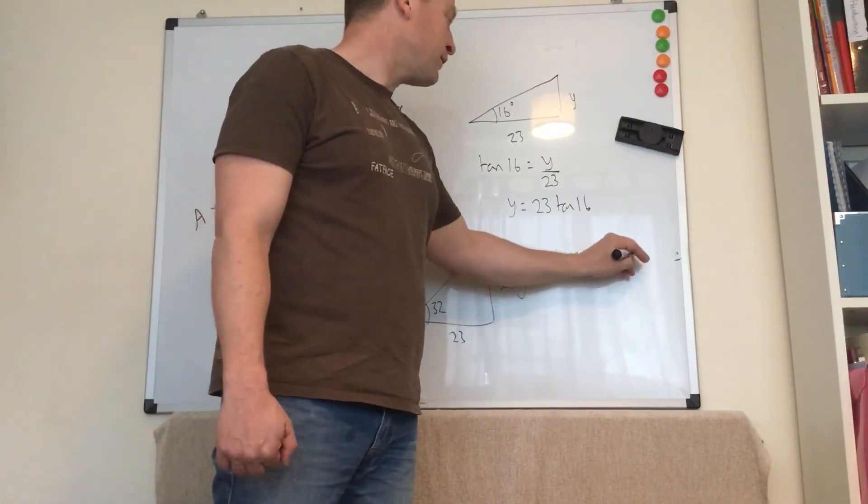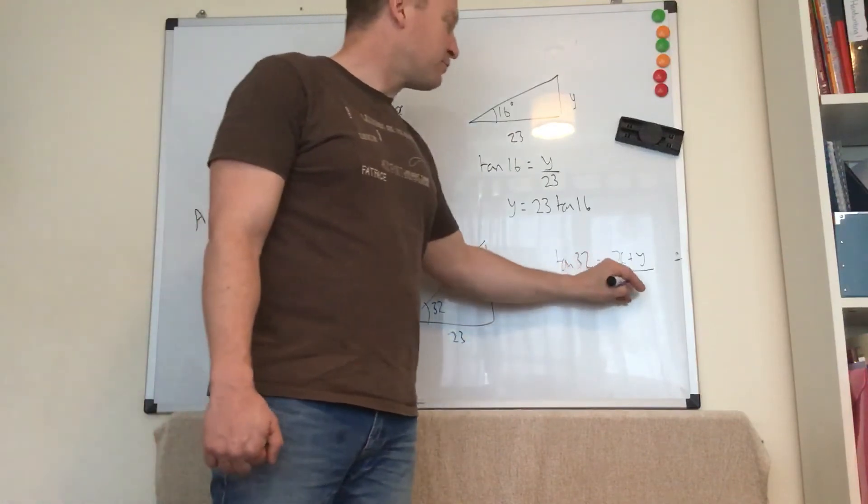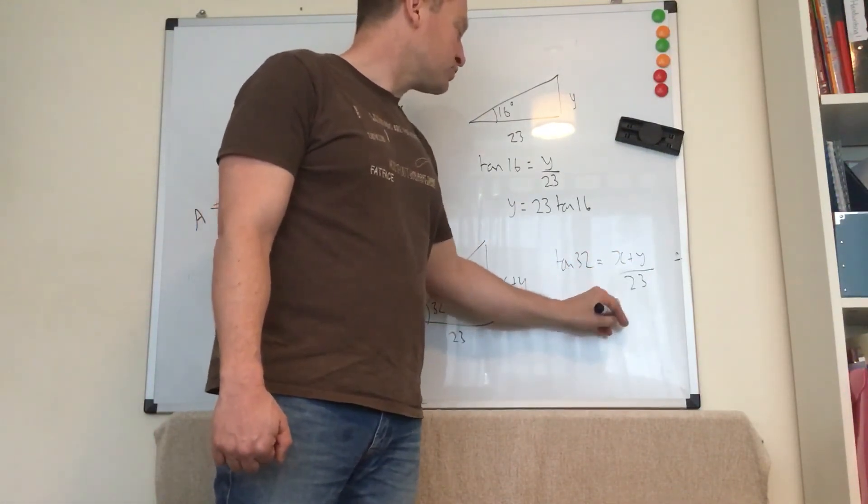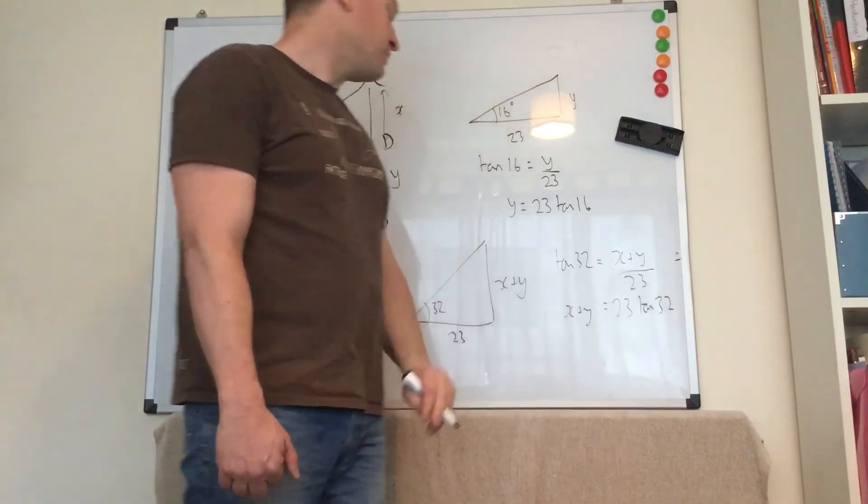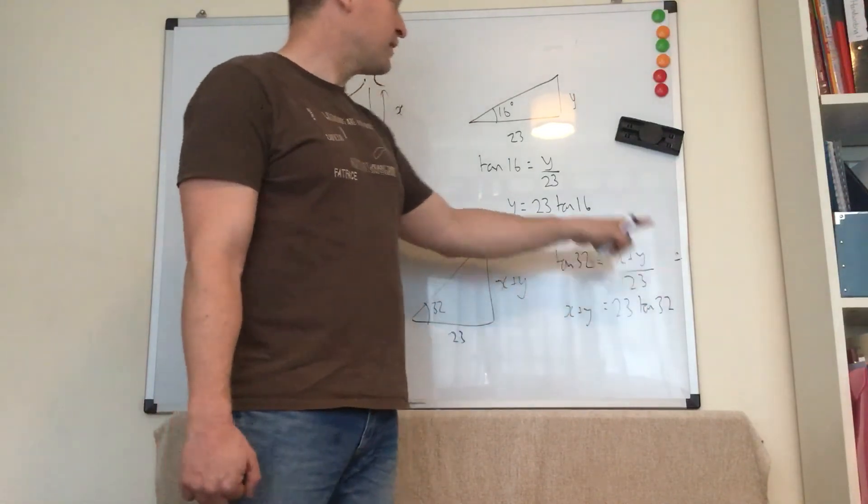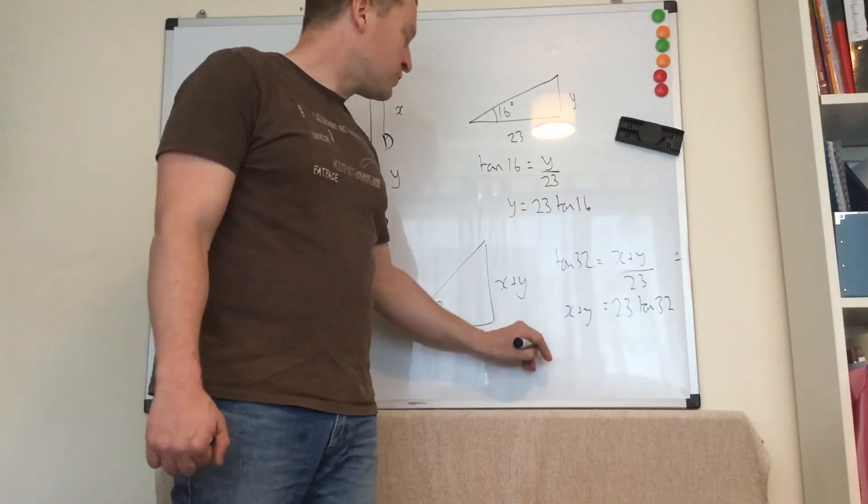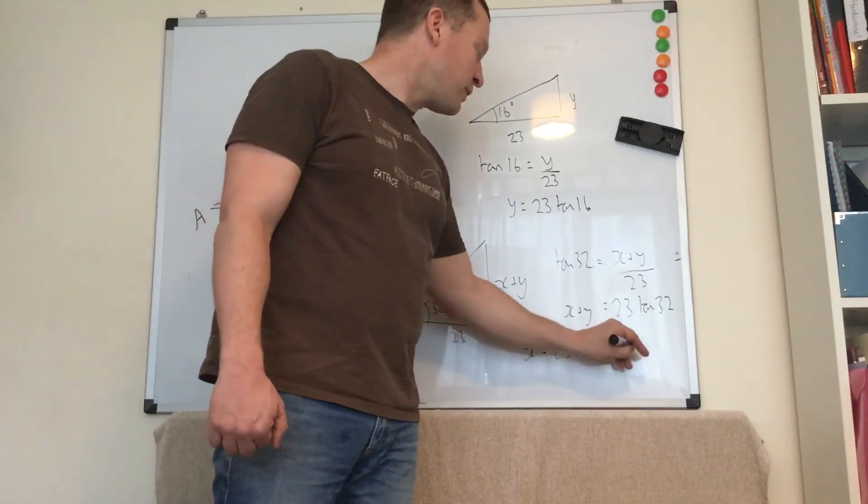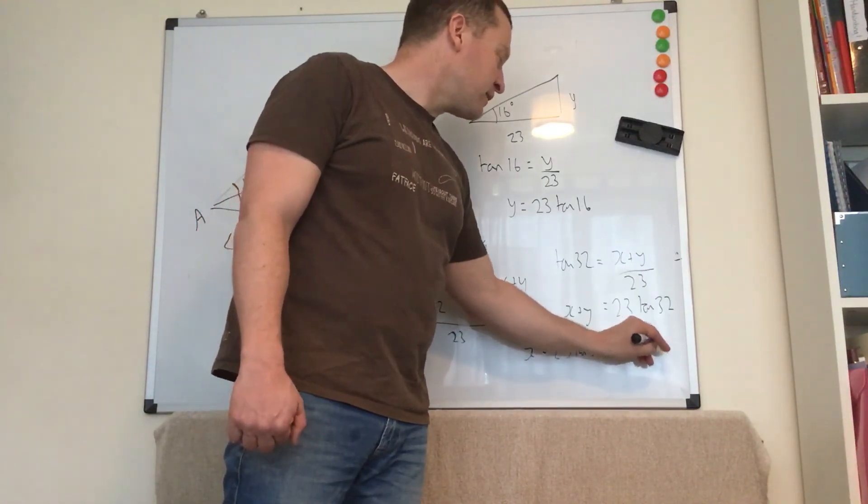Equals x plus y, the opposite, over 23, the adjacent. So x plus y equals 23 tan 32. So we want to work out x by itself. I need to do x plus y take away y. So we get x equals 23 tan 32 take away 23 tan 16.